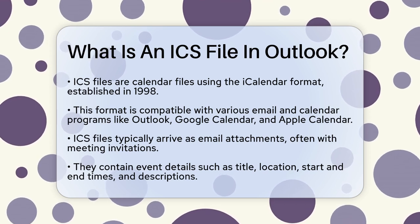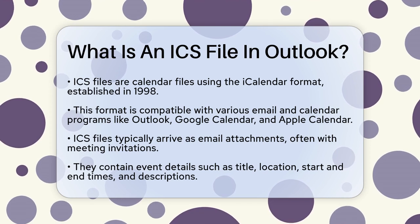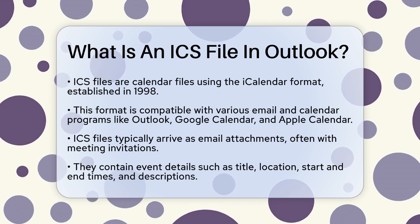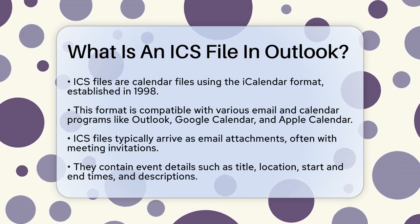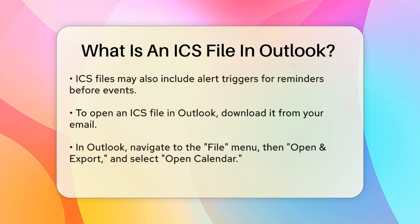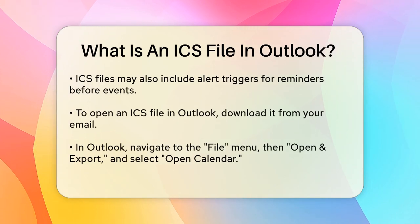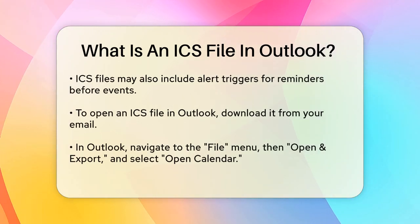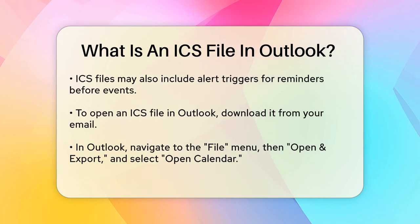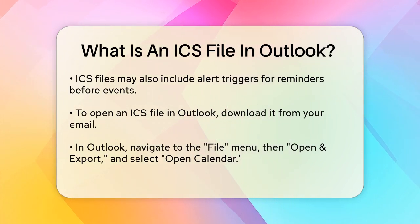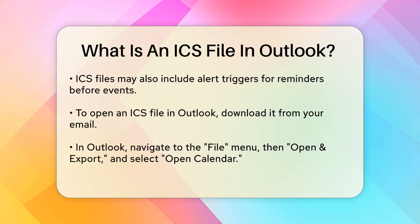When you receive an ICS file, it usually comes as an attachment in an email, often with a meeting invitation. This file contains all the details of the event, such as the title, location, start and end times, and even a summary or description of the event. It might also include alert triggers, so you get reminders before the event.